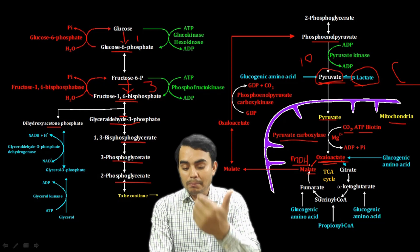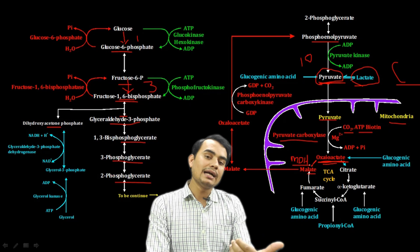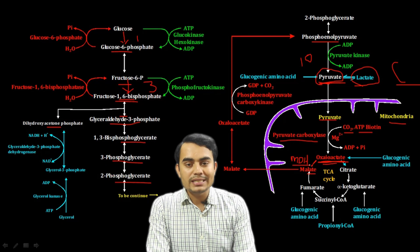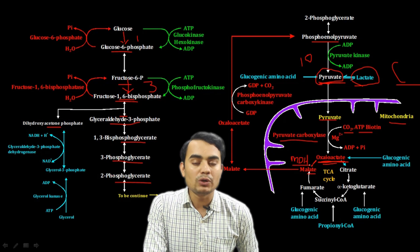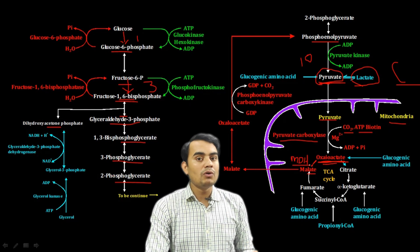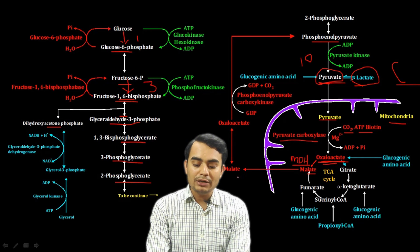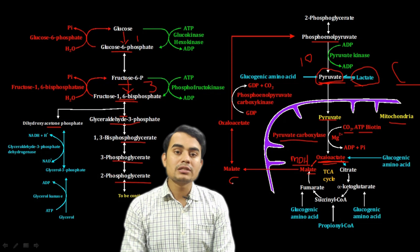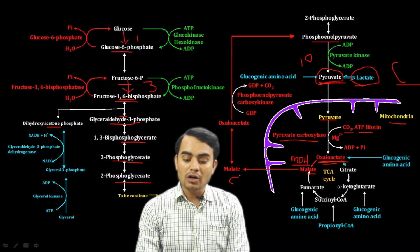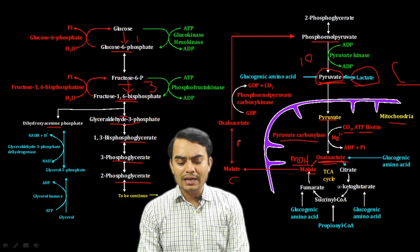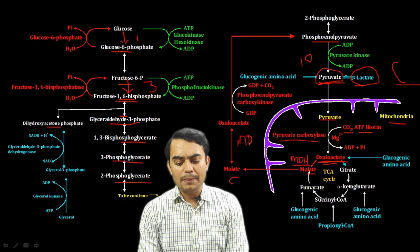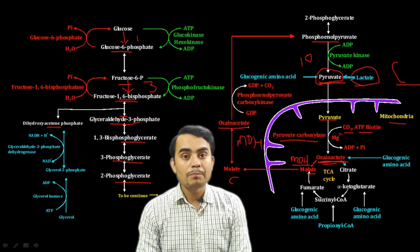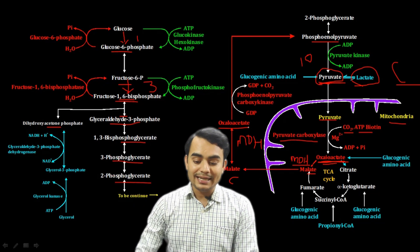Malate is formed because oxaloacetate is impermeable to the mitochondrial membrane and cannot leave. So oxaloacetate is converted to malate, which can cross the mitochondrial membrane. This malate moves from the mitochondria to the cytosol. In the cytosol, malate is converted back to oxaloacetate again by the same enzyme, malate dehydrogenase.